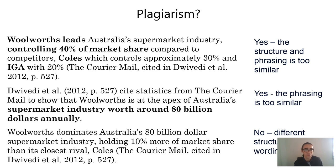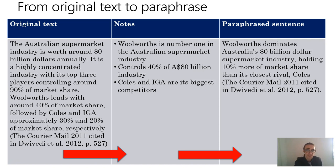Always keep in mind when paraphrasing that you need to alter the structure and phrasing, the order in which ideas are expressed, and the actual wording used. Your paraphrase should be different to the source while still preserving some key terminology — for instance, 'supermarket industry,' 'Australia,' '$80 billion.' If you change these terms, you're actually changing the information. So the key thing is to change the wording and structure around those key terms. As I said, it is always important to paraphrase from notes. You can see here how the original paragraph has been converted into note form and then the paraphrase built upon those notes.